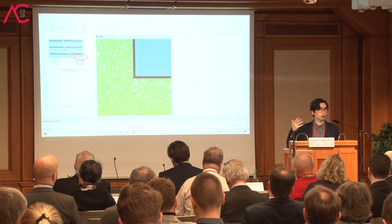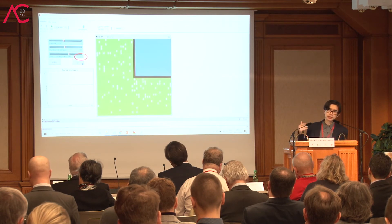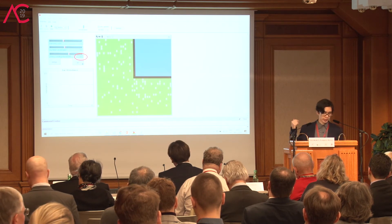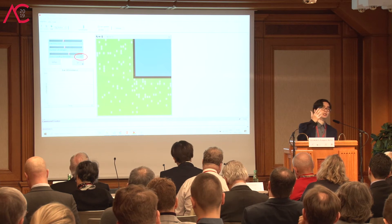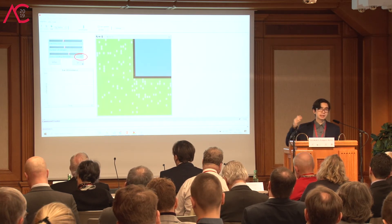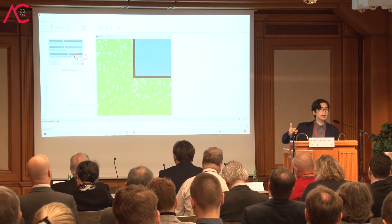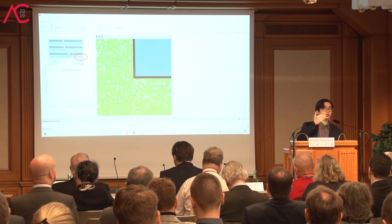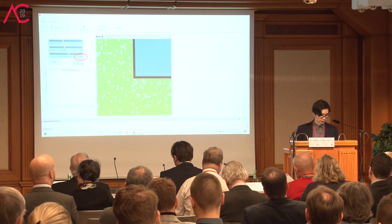Unlike other AI such as finite state machines, with GOAP you give the agent its goals and its set of possible actions, and the AI is responsible for connecting all those actions to arrive at the goal. This will be clear with an example.